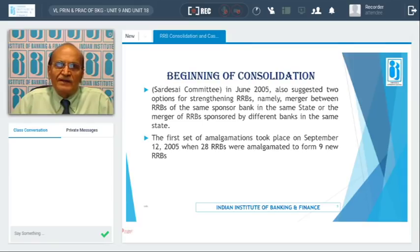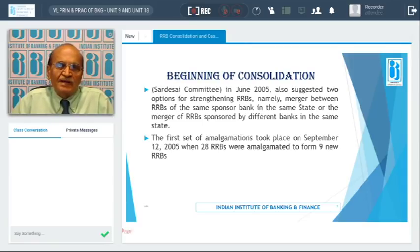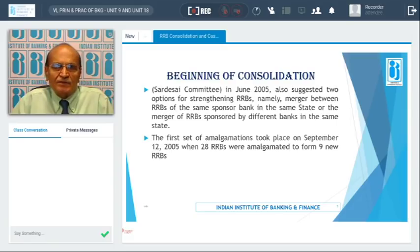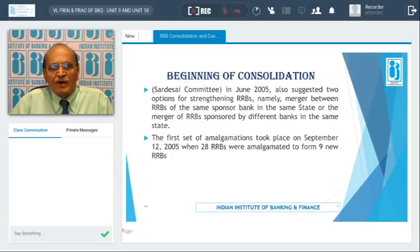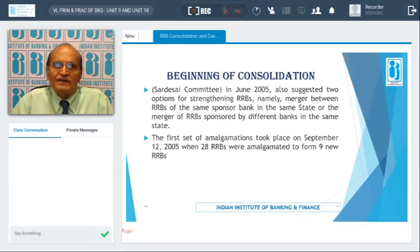While this was under consideration, another committee was appointed by the regulators, known as the Sertesai Committee. This committee suggested two options for strengthening the Regional Rural Banks: first, merger between RRBs of the same sponsor bank in the same state, or merger of RRBs sponsored by different banks in the same state. The focus of the Sertesai Committee's recommendations was that it should be state-focused — all RRBs in a state should be consolidated by either method.